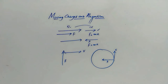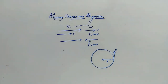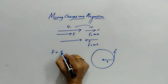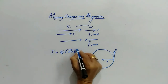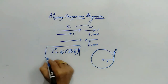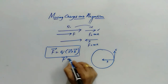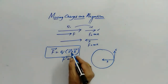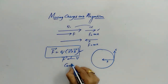According to the Lorentz force, we have studied that F = qV × B. So here this force F is perpendicular to V, and therefore it provides the centripetal force.